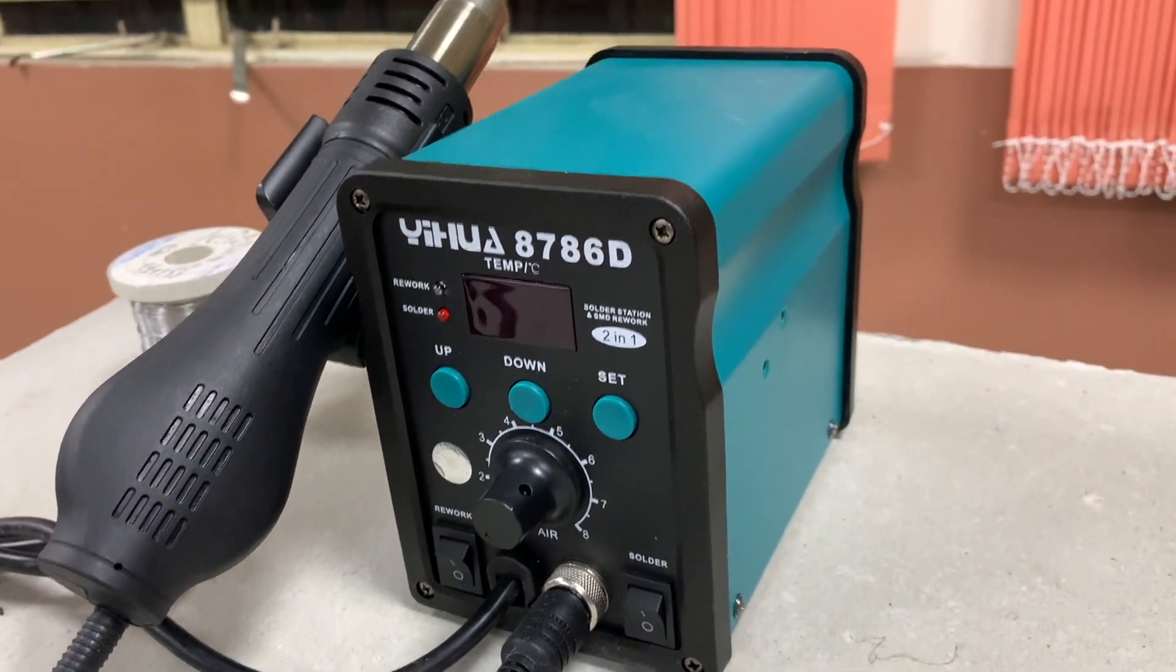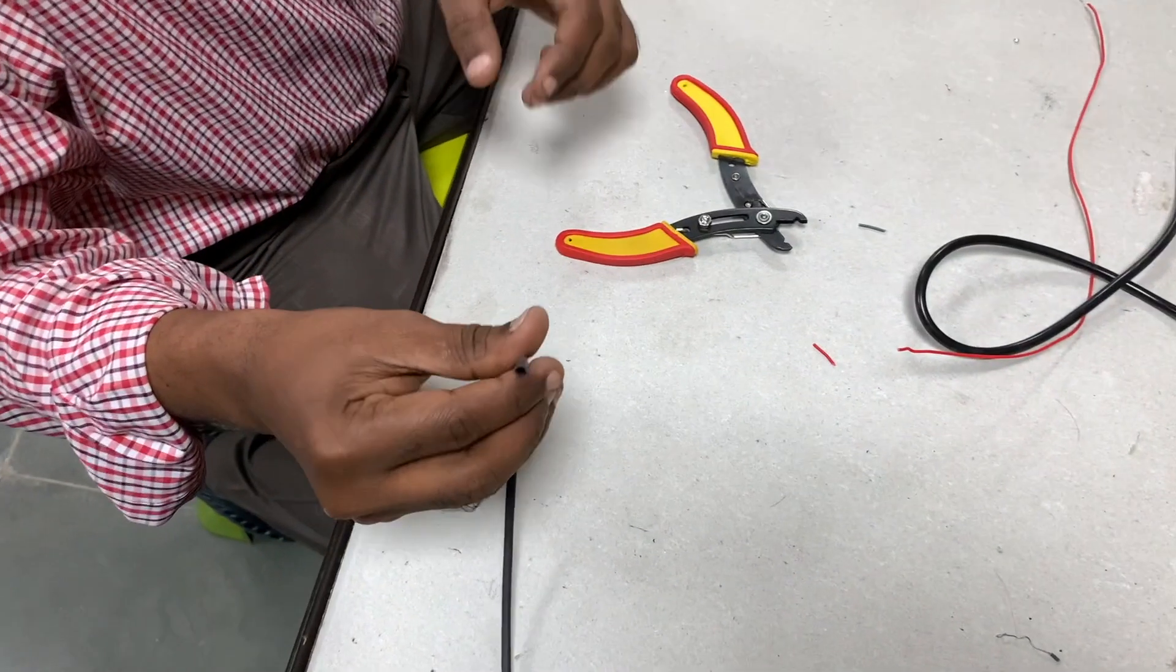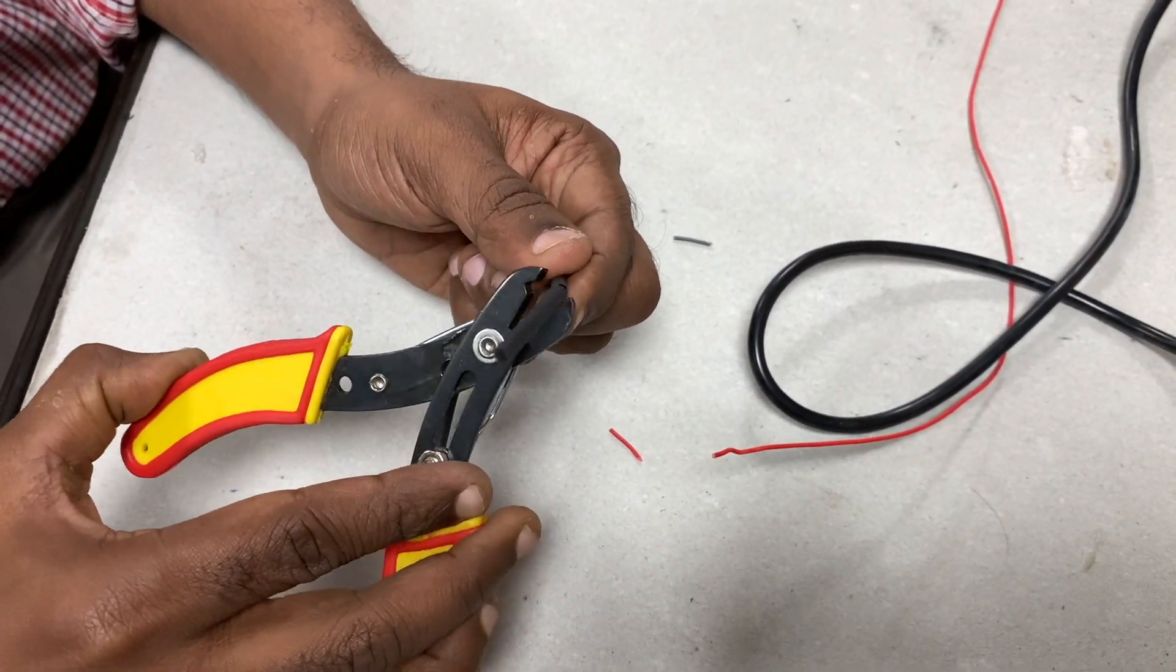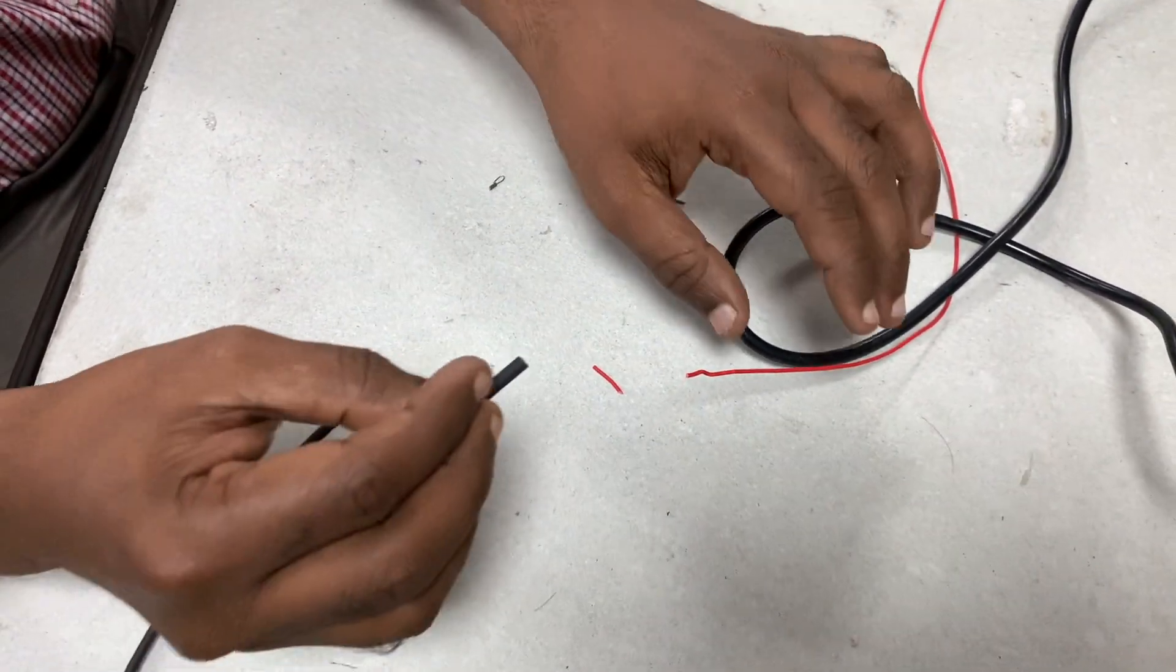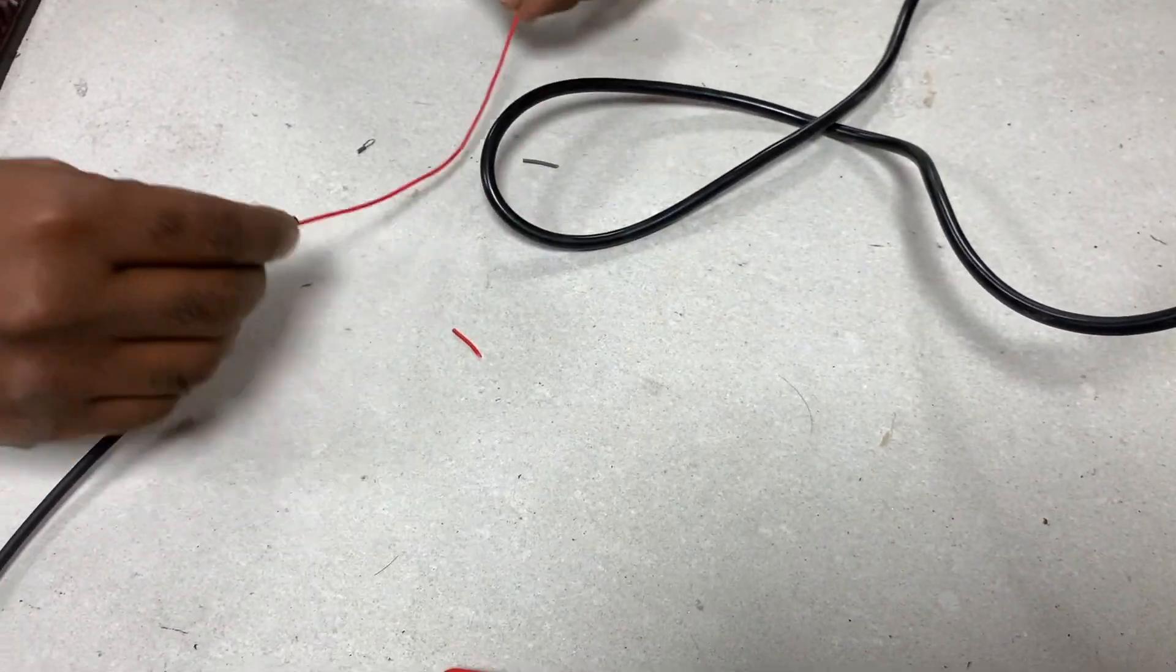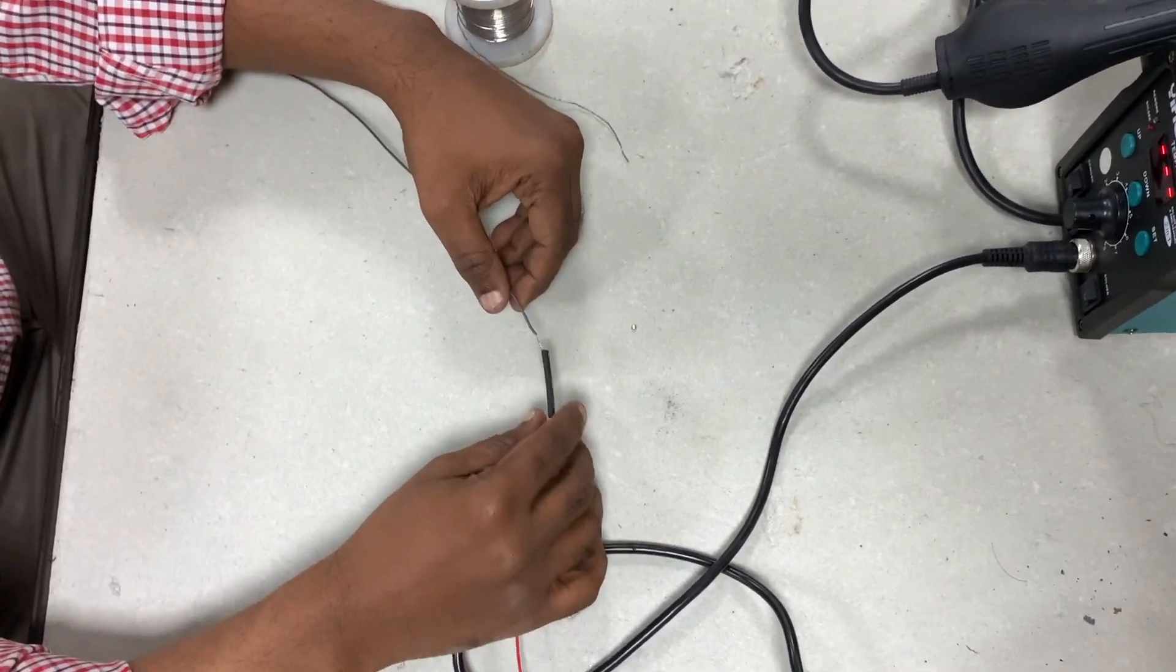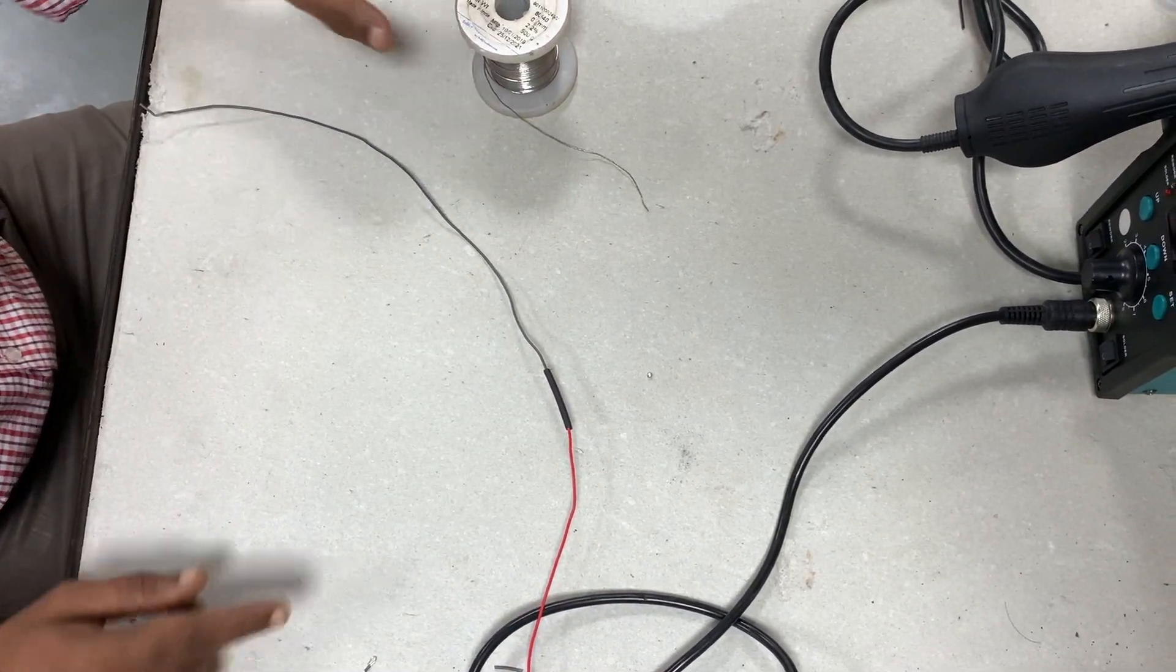So next what I'm going to do is take this heat shrink tube. This black looking tube is the heat shrink tube. I'm going to cut a part of it. Then I'm going to put it over the wire which I have just soldered. And then I'll put it over the joint. Be careful. You pull too hard at this stage, it's going to come out.